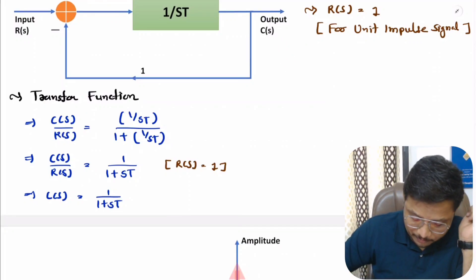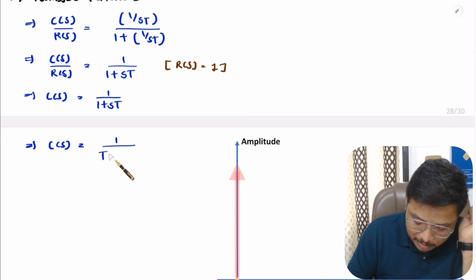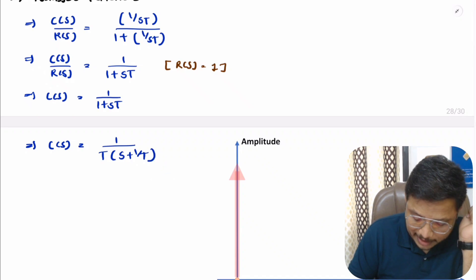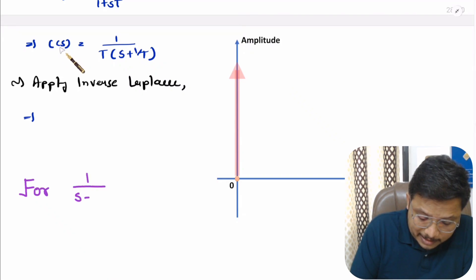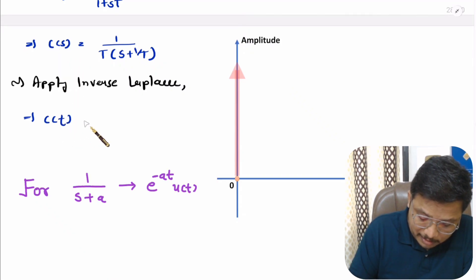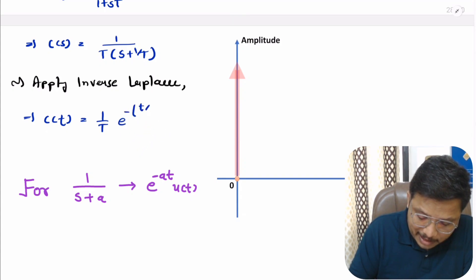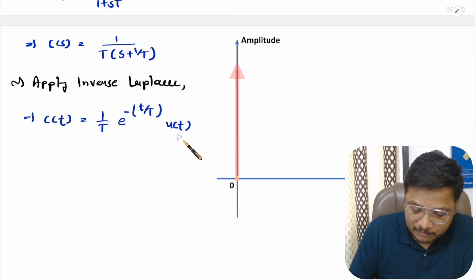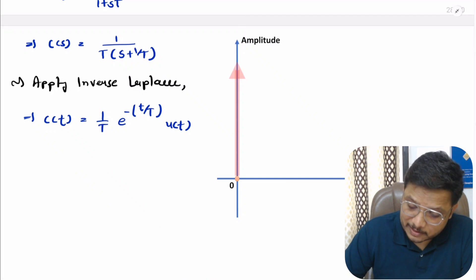To get the output in the time domain we need to apply the inverse Laplace transform. First, let us rearrange the term by taking T common from the denominator, giving s plus 1/T. Applying the inverse Laplace transform, the output becomes (1/T) multiplied by e to the power minus t/T, multiplied by u(t). This is valid for t greater than or equal to 0.